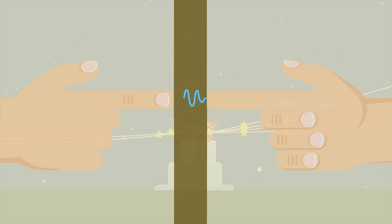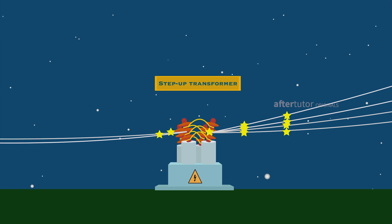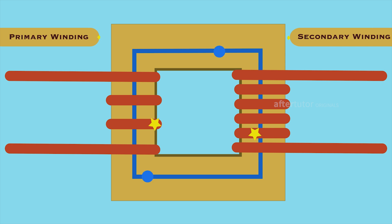Simultaneously, for a step-up transformer, the number of winding turns in the primary winding is less compared to the secondary winding.